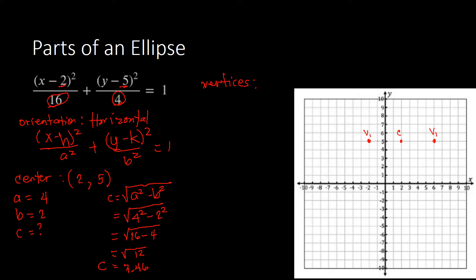Now we identify the coordinates for the vertices. The first one is at (negative 2, 5), and the other one is at (6, 5). Those are our vertices.